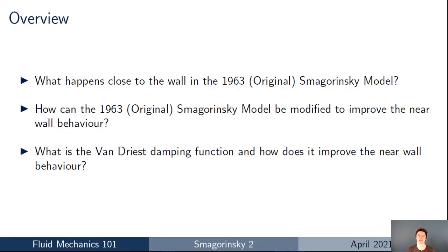I'm going to start by reviewing the original Smagorinsky model and looking at what happens close to the wall. Then, once I've reviewed the original model, we're going to look at what methods we can use to improve its behaviour near the wall, and finally I'll look specifically at the van Driest damping function and how we can use that technique to improve the behaviour of the original Smagorinsky model near the wall.